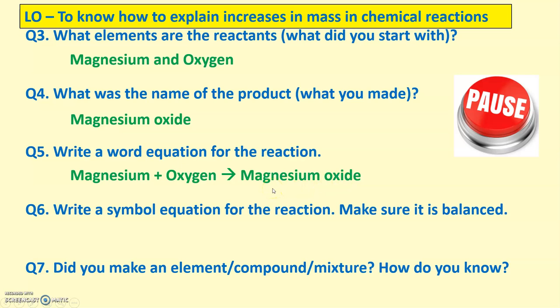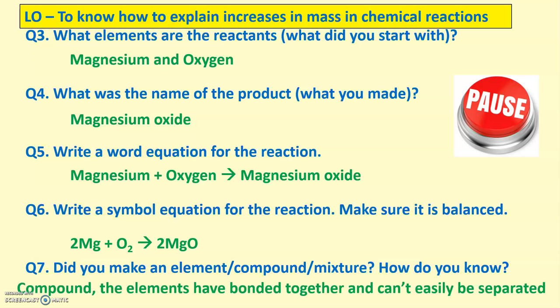As a simple equation, you could have used a periodic table for this. It will be 2Mg plus O2 makes 2MgO. Oxygen always goes around as a pair. It's diatomic. So, that means there's two. It always goes around in two. We're going to put two in front of the Mg, MgO here, and two in front of the Mg just there. Did you make an element, compound or mixture? How do you know? So, the product that was produced was a compound. There's a compound, magnesium oxide here, because the elements are bonded together and can't easily be separated. You cannot easily separate the Mg here from the O because they are bonded together. So, give yourself a mark out of 5 for that.